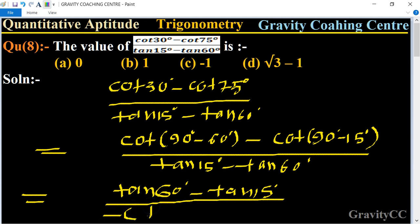So it will become tan 60 degree minus tan 15 degree, so it is cancel, minus 1, which is the required answer. So the option C is the correct answer.